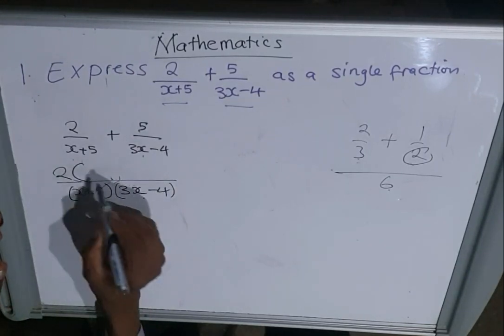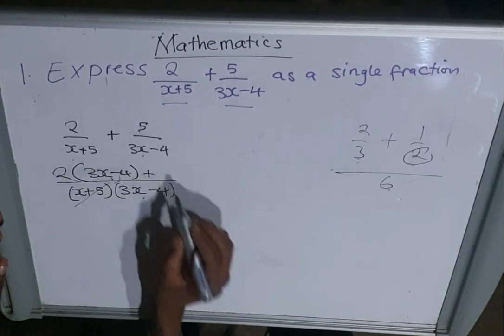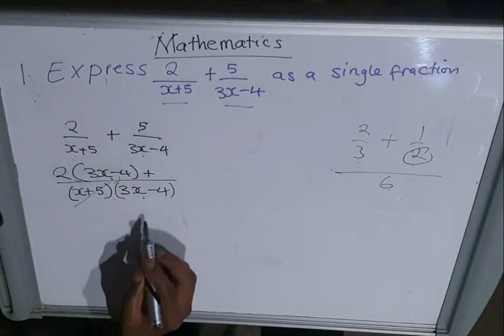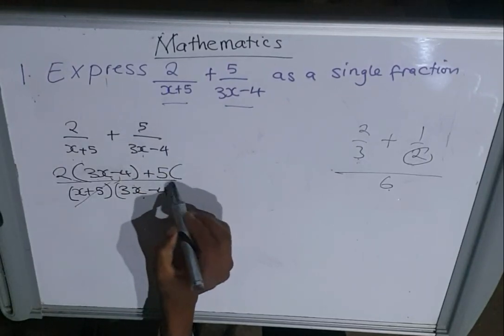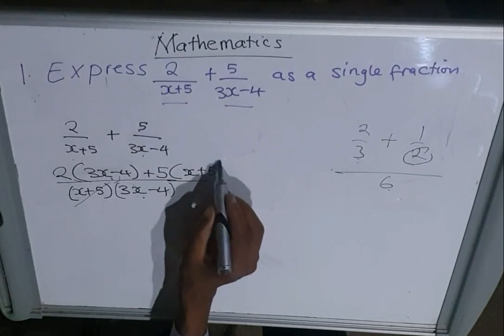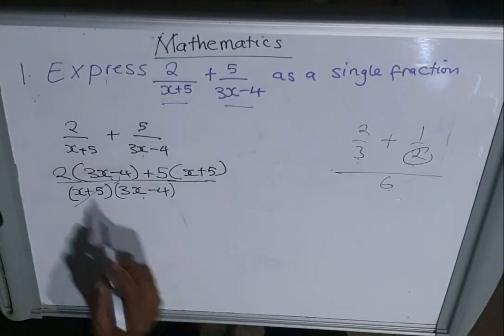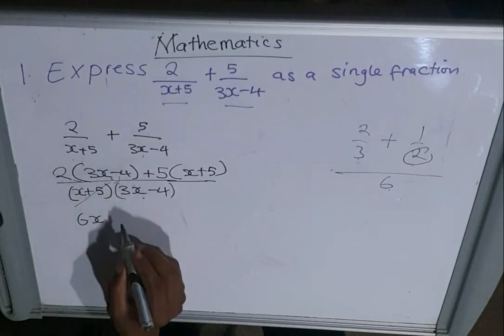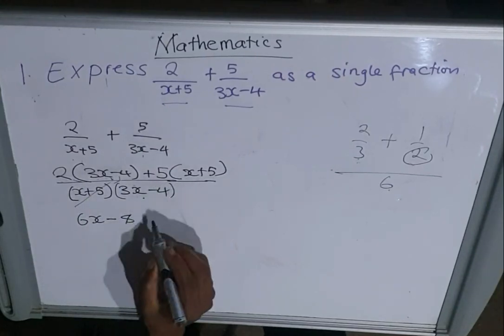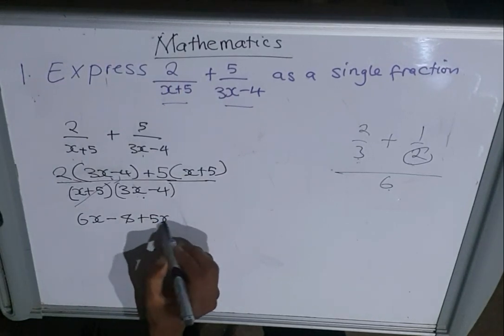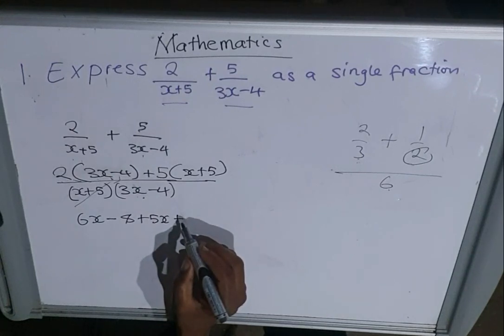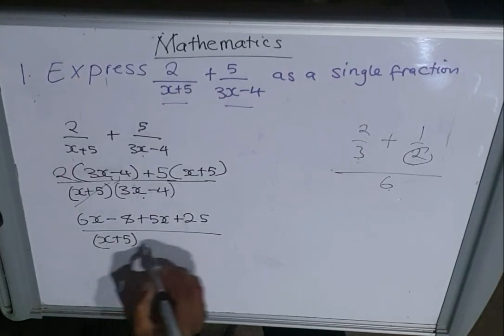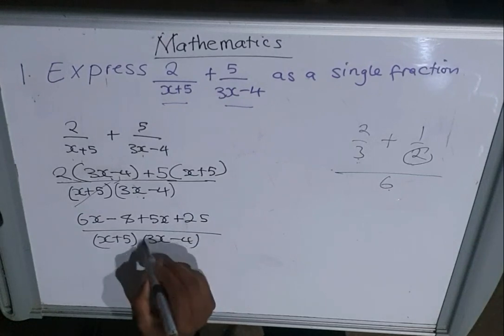So we have 2(3x-4), then we have plus. Then (3x-4) into the common denominator - we go to the numerator there, (x+5) times the 5 which is on top there. So 5 times (x+5). We expand on top: we have 2 times 3x which is 6x, 2 times negative 4 giving us negative 8, 5 times x giving us 5x, 5 times 5 giving us positive 25.